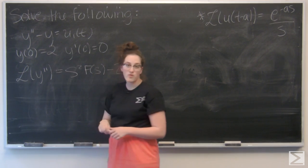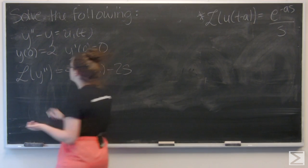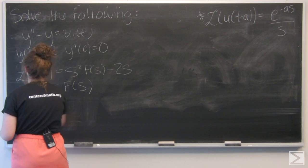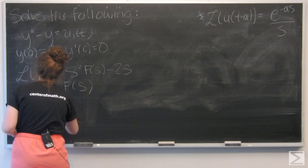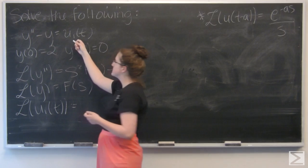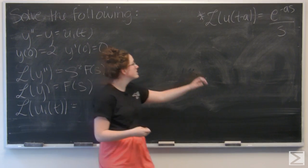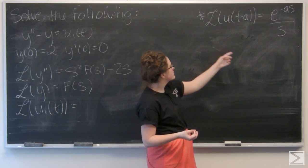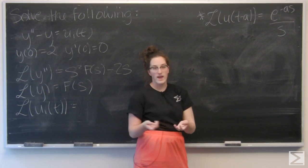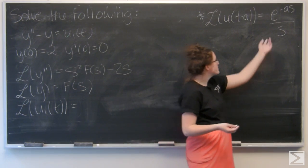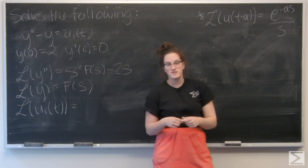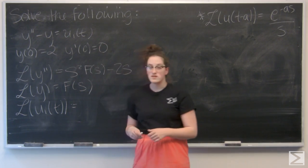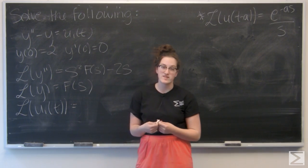The Laplace transform of y is just going to be F of s. And now I just need to take the Laplace transform of this step function — I've written down its general Laplace transform on the board. The Laplace transform of u sub a of t equals e to the negative as over s. So here I just need to identify my a, which is 1, so the Laplace transform of this step function is e to the negative s over s.